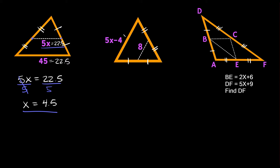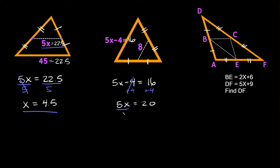Now the next one: we have congruent marks so we know it's a mid-segment, and the mid-segment equals 8. The long side is 5X minus 4. If the mid-segment is 8, the long side should be 16. So we set up 5X minus 4 equals 16, add 4 to both sides to get 5X equals 20, then divide by 5 to get X equals 4.